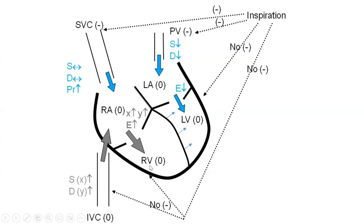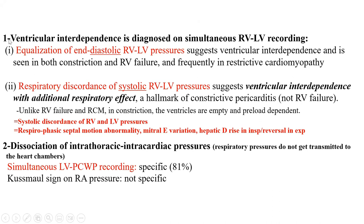Even in normal individuals, right-sided flow increases in inspiration and left-sided flow increases in expiration, but the change is far less dramatic than in constriction — due to that intrathoracic/intracardiac dissociation. In heart failure and restrictive cardiomyopathy there is no stroke volume reserve, so even if you want to increase right heart flow in inspiration, it won't increase much. So the hallmarks are: ventricular interdependence causing equalization of end-diastolic RV/LV pressure, and more importantly, respiratory discordance of that ventricular interdependence.